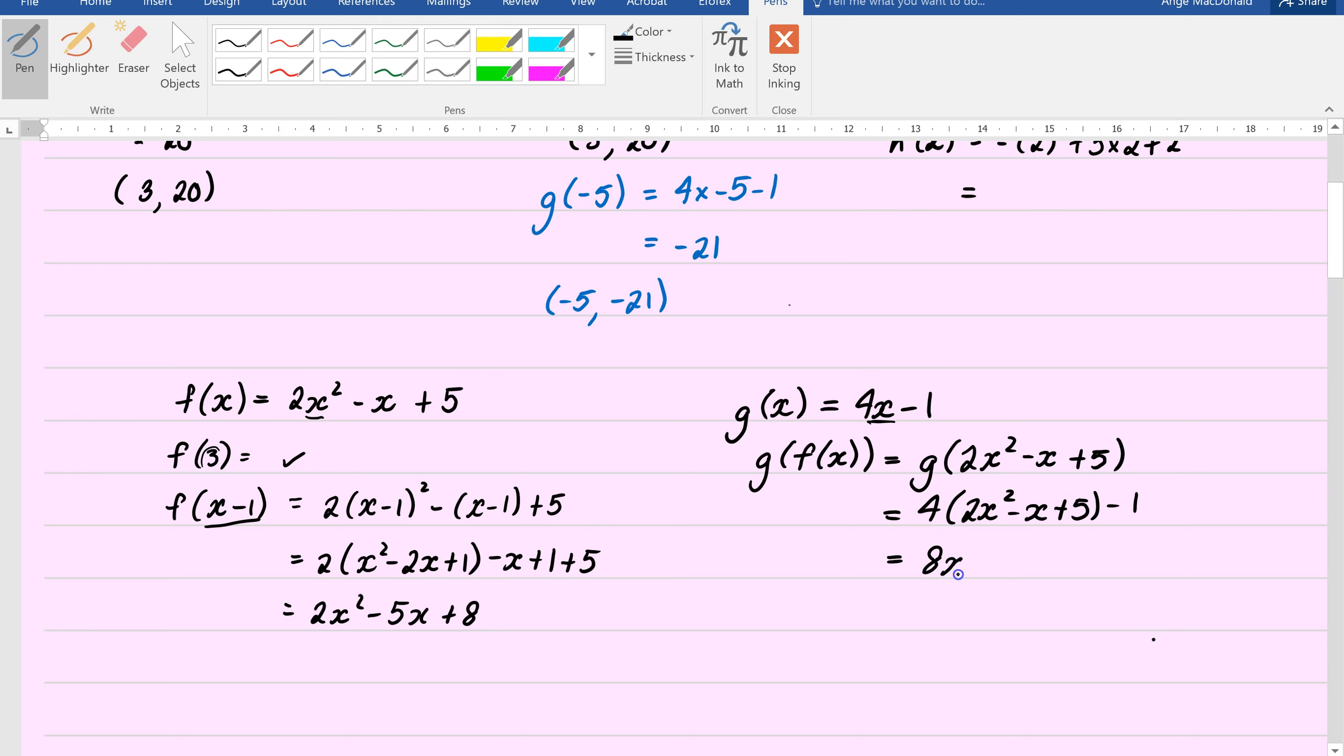Okay? So that becomes 8x squared minus 8x. 4 fives are 20, take 1 is 19. Okay? And the last bit that we want to be aware of, and this comes back to being able to read.